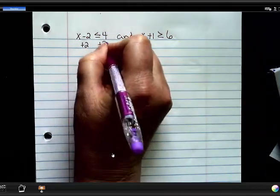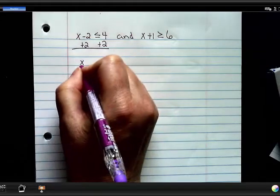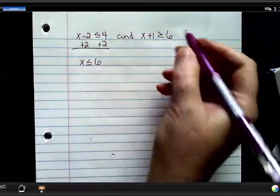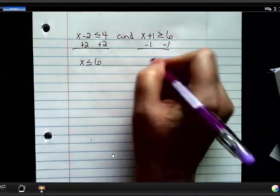I'm going to add 2 to both sides, and I'm going to subtract 1 from both sides.